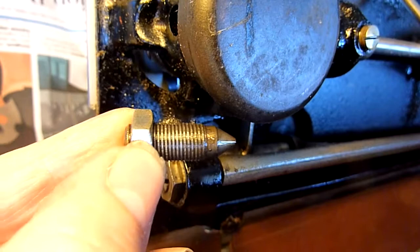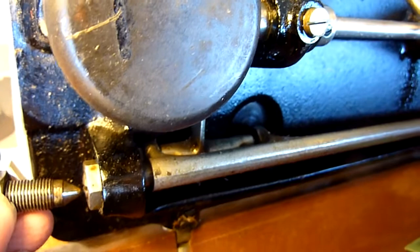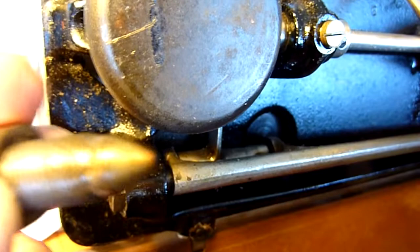By loosening the nut you are able to move this cone point screw to the right or to the left. And it will move the feed dog as well.